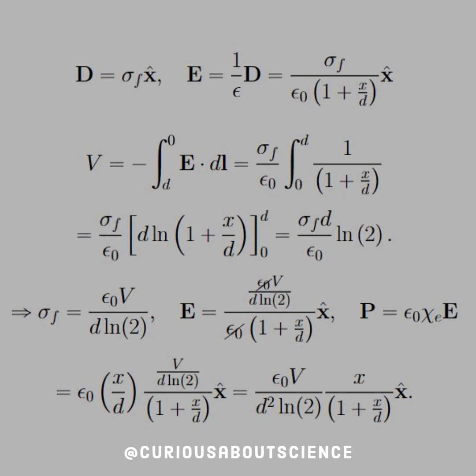Recall that chi e is equal to x over d, as in the first set of parentheses, and E is as such. We note that we have a term for just the x, which is the second fraction, and a term for constants, which is the first fraction.